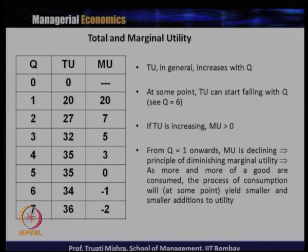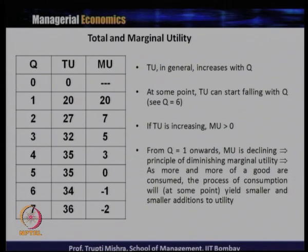Total utility in general increases with Q. From unit 1 to unit 4, the total utility is increasing. At some point total utility can start falling with Q — from Q equals 6, total utility is decreasing. Between the fourth unit and fifth unit, total utility is constant.